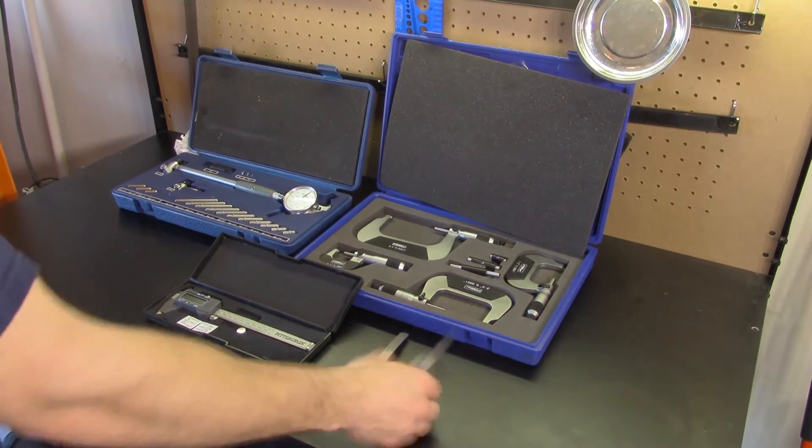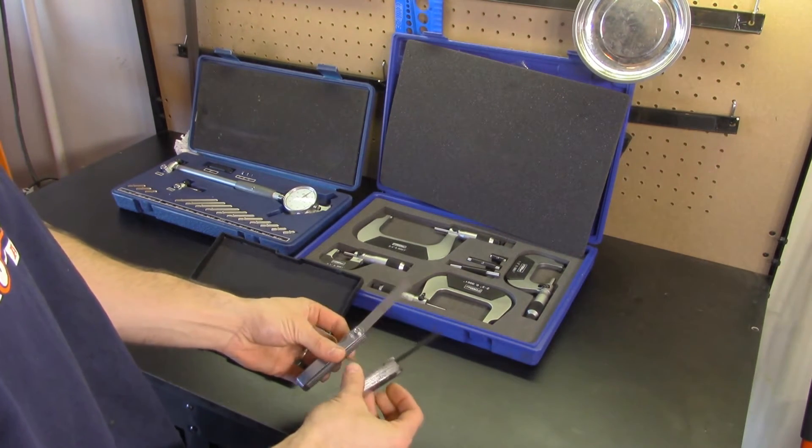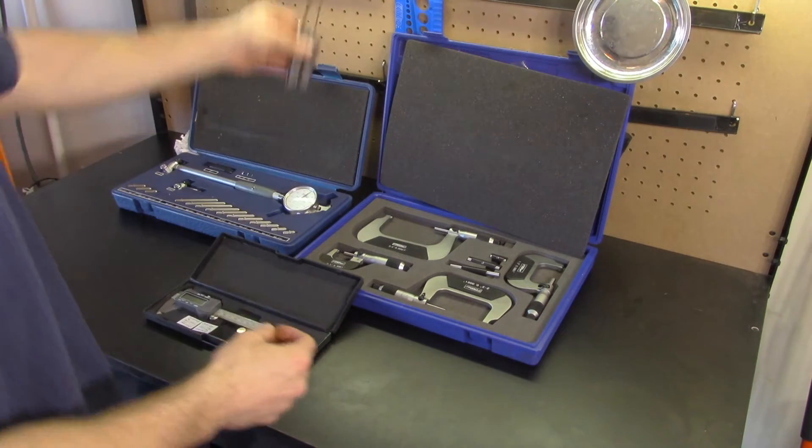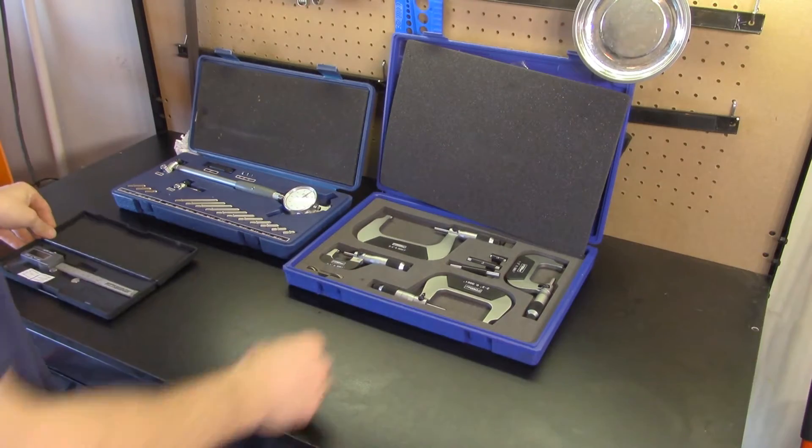First up is a few sets of filler gauges. These contain various strips of metal that have a predetermined thickness. These can be used to measure your rod side clearances, your crank end play, and your deck for flatness.